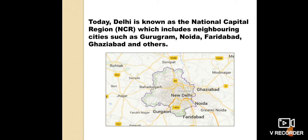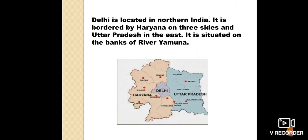You can see in the map that Delhi has neighboring cities like Gurugram, Noida, Faridabad, and Ghaziabad. Delhi is located in northern India. It is bordered by Haryana on three sides and Uttar Pradesh in the east. It is situated on the banks of the River Yamuna, as you can also see in the map.